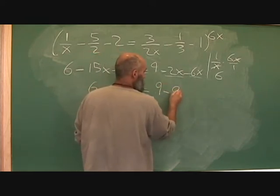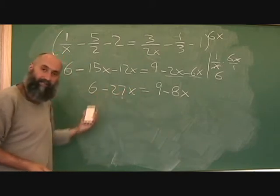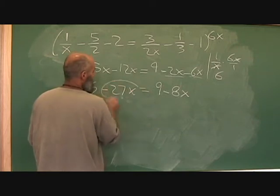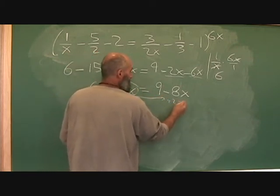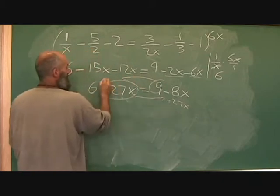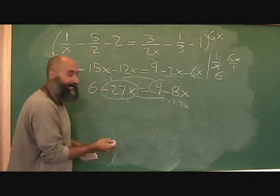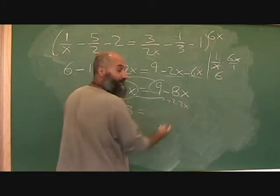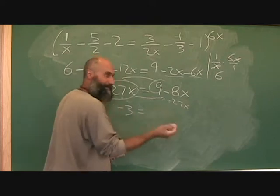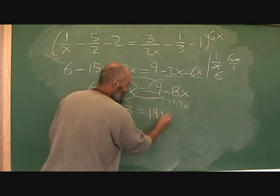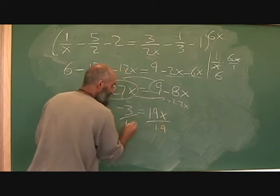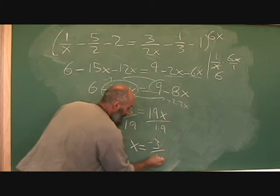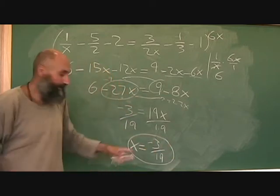Bring all your x's to one side. Take your numbers to the other side. So it becomes plus 27x. Over here, it becomes minus 9. So 6 minus 9 is negative 3. 27x minus 8x is 19x. And then divide by 19. So x is equal to negative 3 over 19. That's your answer.